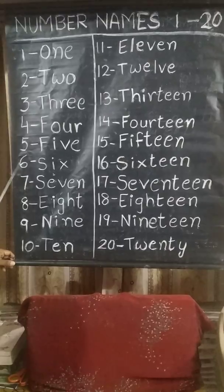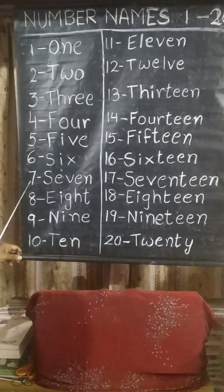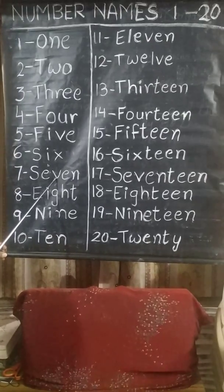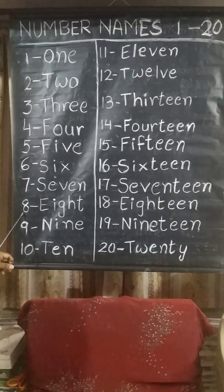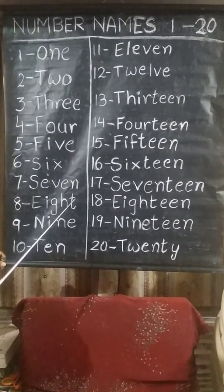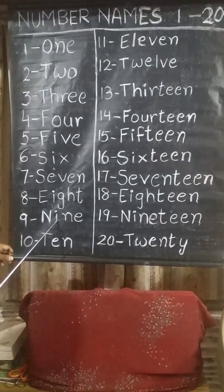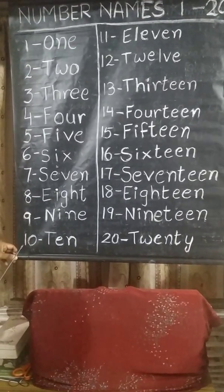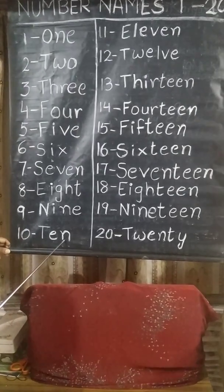6 — S, I, X. SIX. 7 — S, E, V, E, N. SEVEN. 8 — E, I, G, H, T. EIGHT. 9 — N, I, N, E. NINE. 10 — T, E, N. TEN.